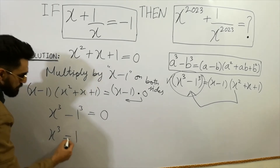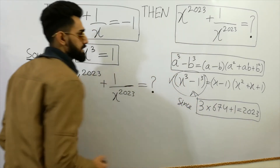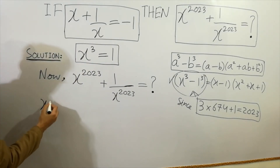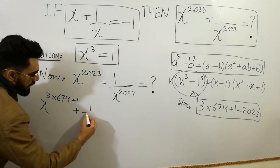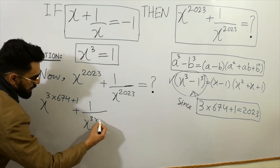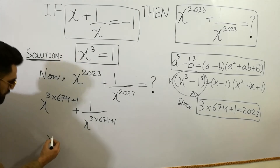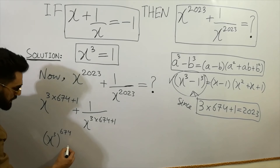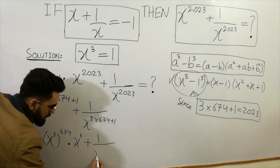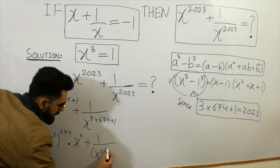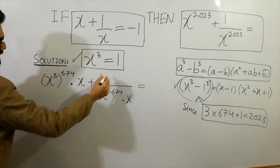Now, 3 multiplied by 674 plus 1 is equal to 2023. So we can write x raised to power 2023 as x raised to power 3 times 674 plus 1, which equals x cubed raised to power 674 times x. Similarly, 1 over x raised to power 2023 equals 1 over x cubed raised to power 674 times x.